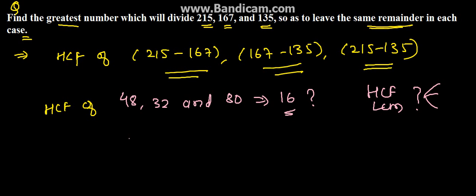Therefore we can say that the greatest number which divides 215, 167, and 135 so as to leave the same remainder is 16. Therefore the answer is 16, which is the solution for the given problem. Thank you.